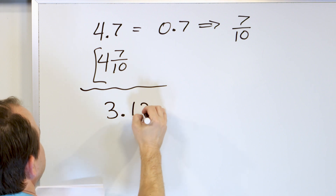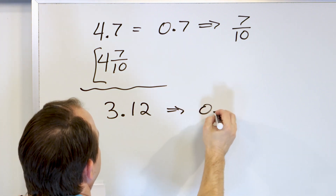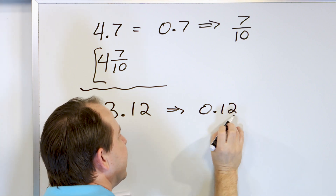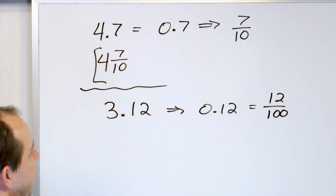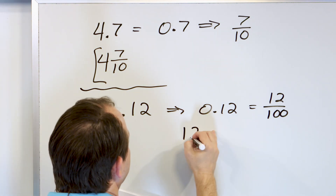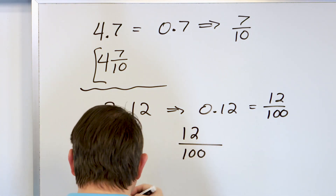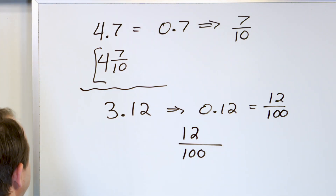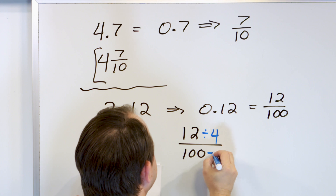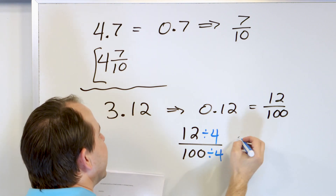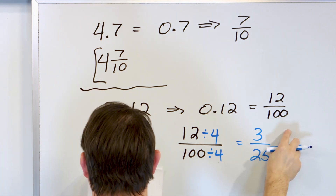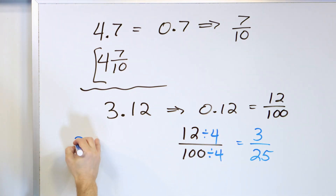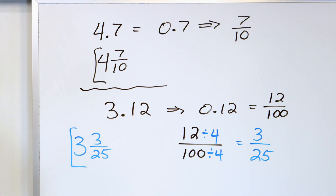Let's take a look at 3.12. Focusing on 0.12, this is 12 in the farthest position, which is the hundredths position. How do we simplify 12 one-hundredths? We could divide by 2, but we can do better — we can divide by 4. 12 divided by 4 is 3, and 100 divided by 4 is 25. So we have 3 twenty-fifths, and attaching it to the 3 gives us 3 and 3 twenty-fifths. That's the final answer.